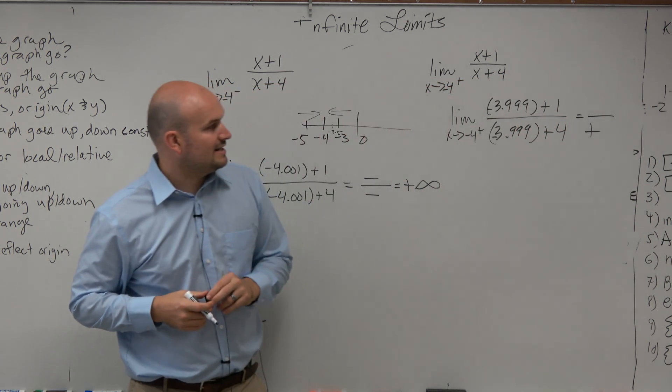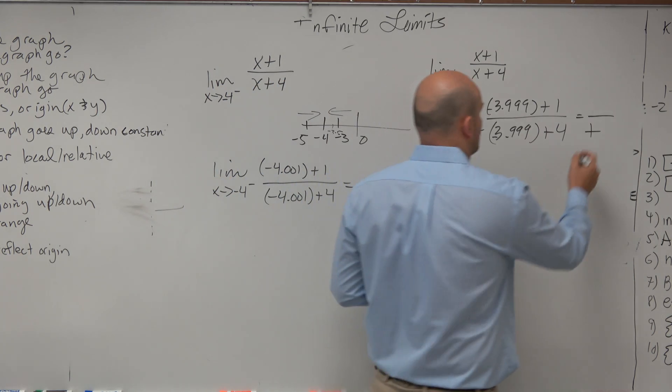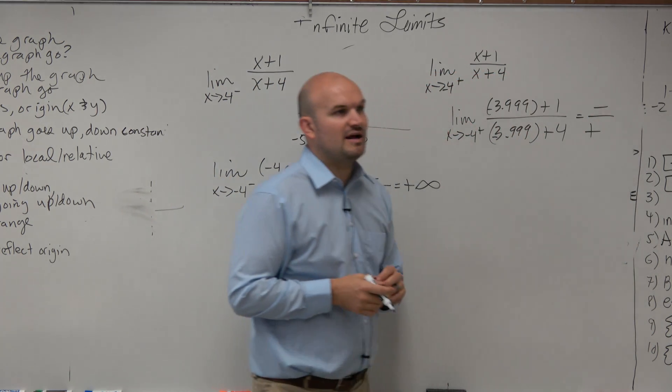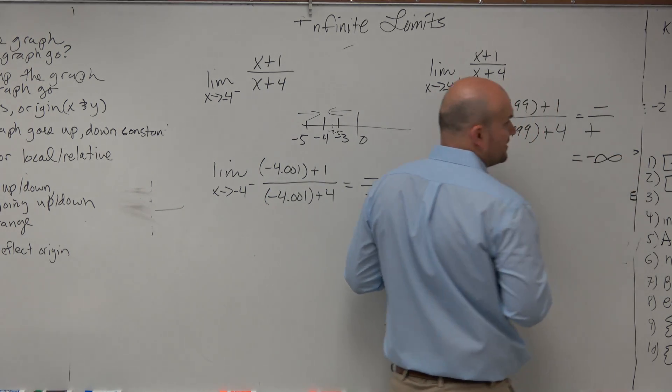And then if you have negative 3.999 plus 1, what are you going to get? Negative. Guys, a negative divided by positive is? Negative. So therefore, it's going to go to negative infinity.